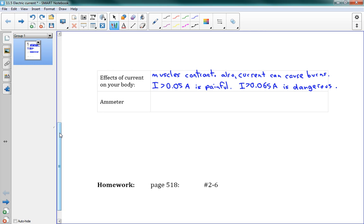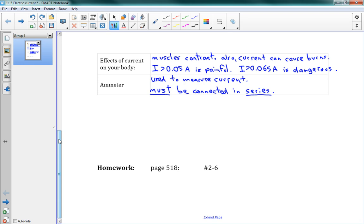Okay, the last thing here is the ammeter. This is how we measure current. So the ammeter is used to measure current, just like the voltmeter was used to measure volts. And like the voltmeter, we need to connect it a certain way. So it must be connected in series. The voltmeter had to be in parallel. Ammeter must be in series. So those are different.